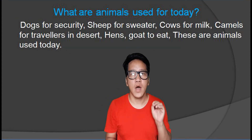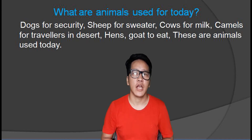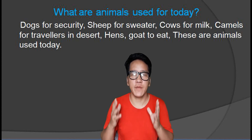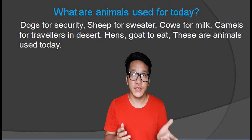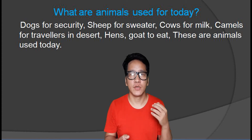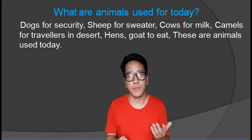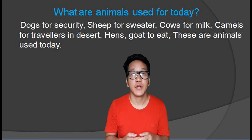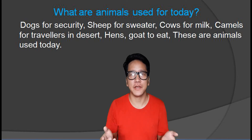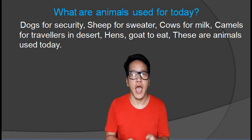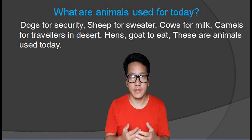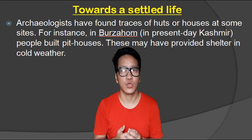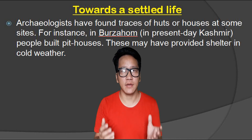Here is a question: What are animals used for today? Animals like dogs are used for security. Sheep for wool for sweaters. Cows for milk. Camels for travel, especially in the desert. Hens and goats to eat. These are some ways animals are used today.